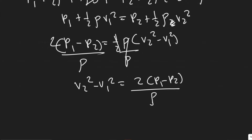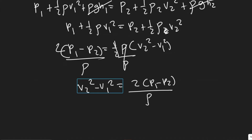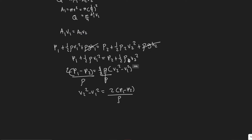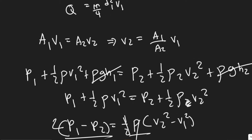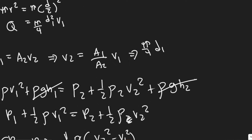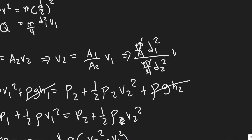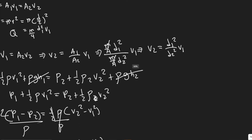We have two unknowns, V2 and V1, so we need to express V2 in terms of V1 using the continuity equation. From A1 V1 equals A2 V2, solving for V2: V2 equals (A1/A2) times V1. Since the areas are pi over 4 times d squared, the pi over 4 cancels, giving V2 equals (d1 squared over d2 squared) times V1.